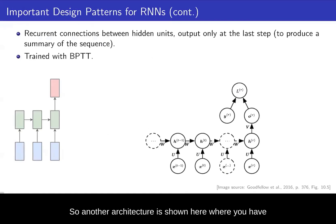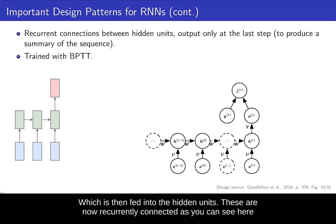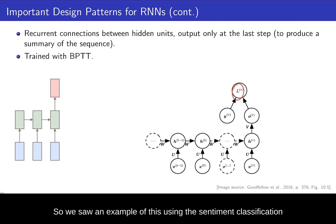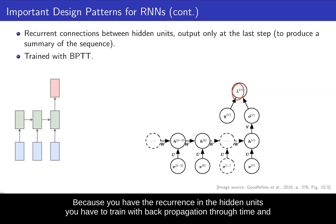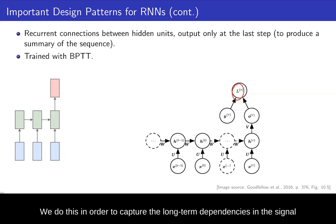Another architecture is shown here where you have varying sequences of input X, which is then fed into the hidden units. These are now recurrently connected, as you can see here. Now you compute this output O with label Y using the loss function L. We saw an example of this using sentiment classification, but you would have a structure similar to this structure that we see here. And because you have the recurrence in the hidden units, you have to train with backpropagation through time. And we do this in order to capture the long-term dependencies in the signal.